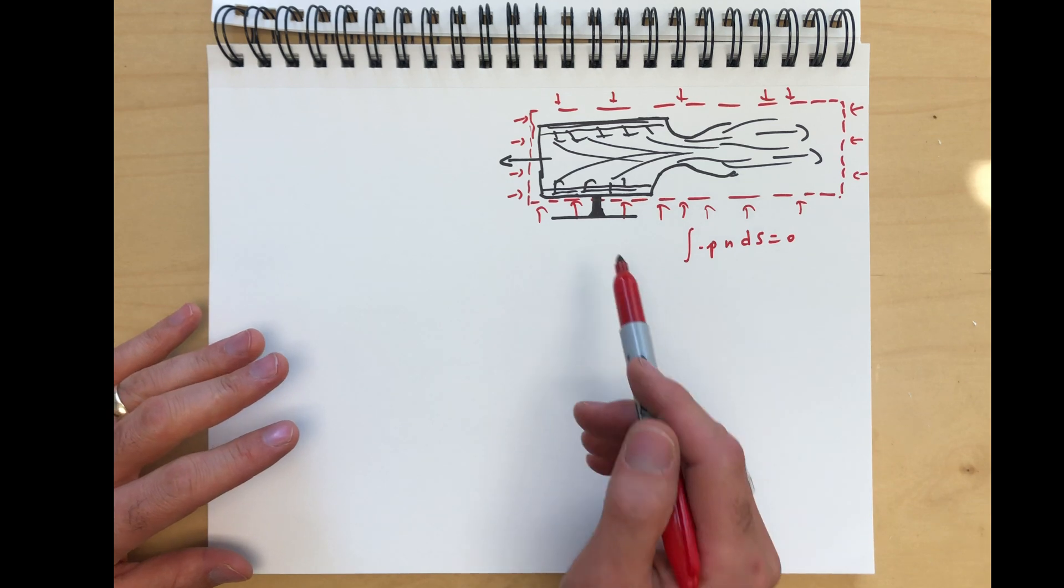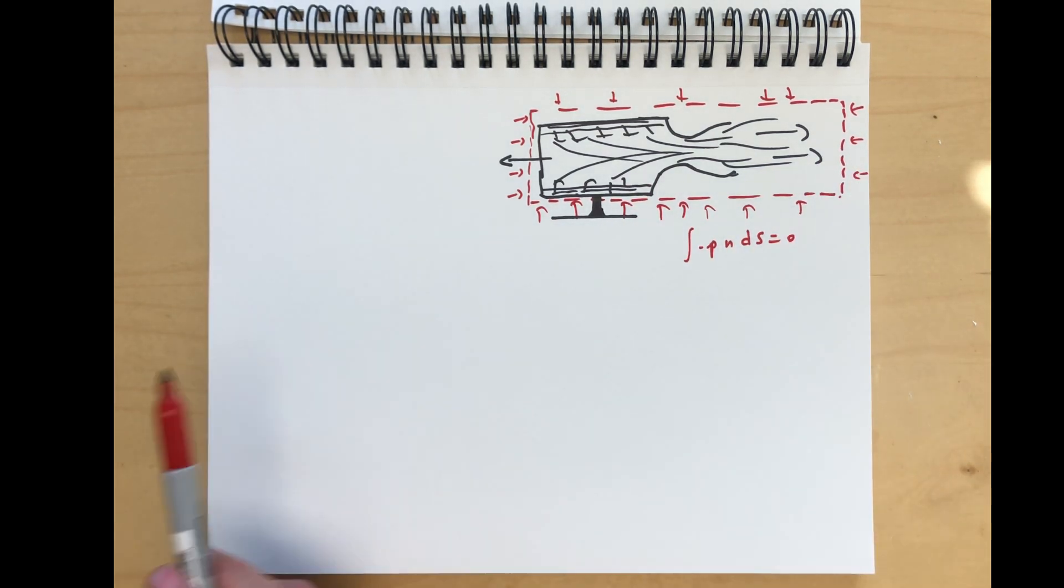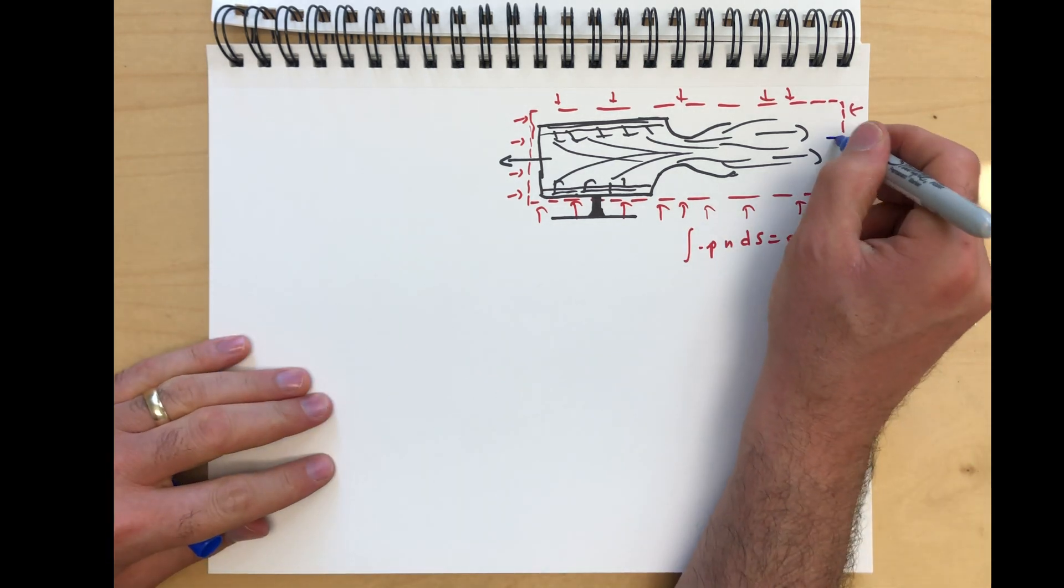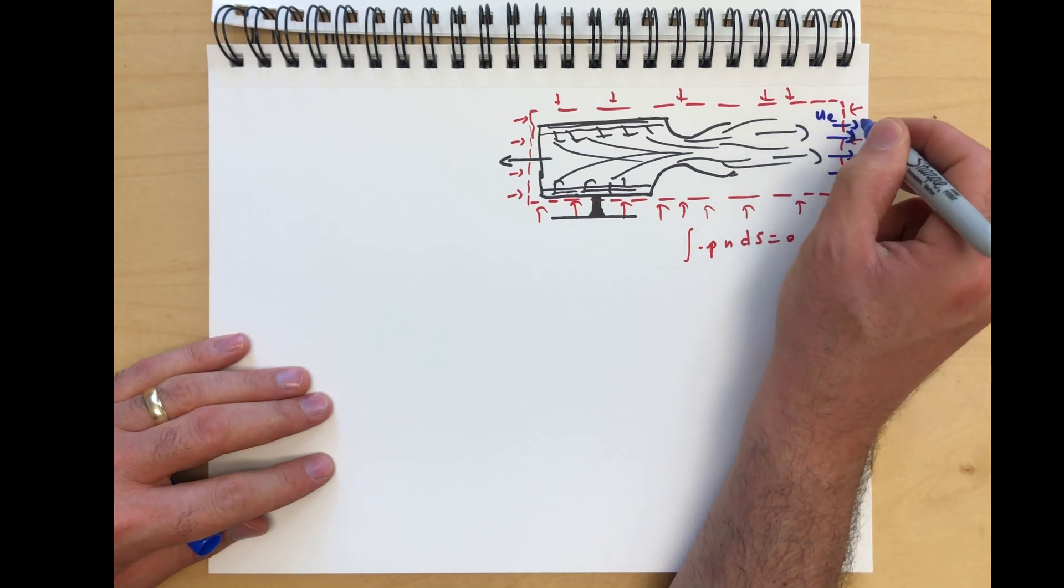But in this case, this is our control volume. That's why we selected a surface far away. And we're going to assume a velocity of u_exit over here, u_e. We're going to assume it's uniform.